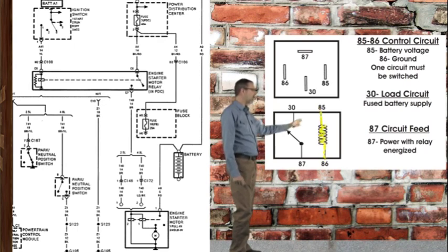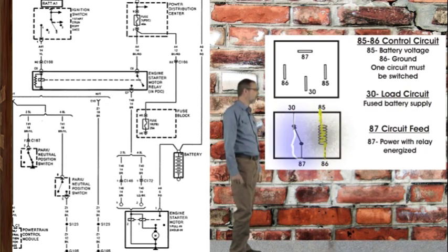When current passes from pin 85 through pin 86, a magnetic field is created which closes the switch between pins 30 and 87. When the switch closes between pins 30 and 87, high current can pass through the relay and initiate the component.